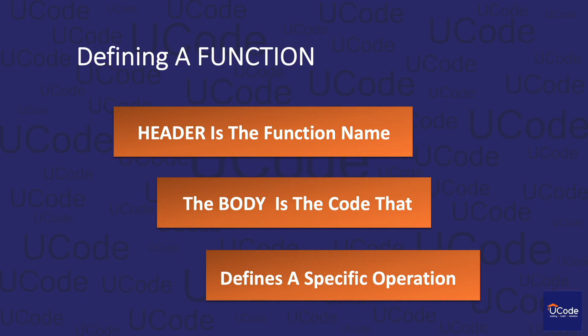There's a particular way of defining functions, and we need to follow that structure. A function has two parts. The first one is the header, which tells us the name of the function. And the second one is the body, which contains the code that implements the actual functionality.